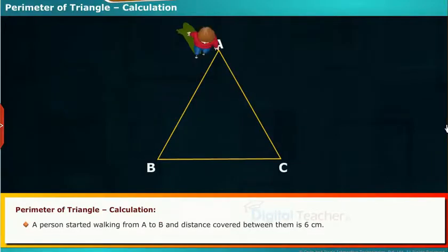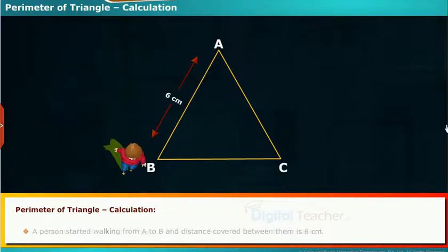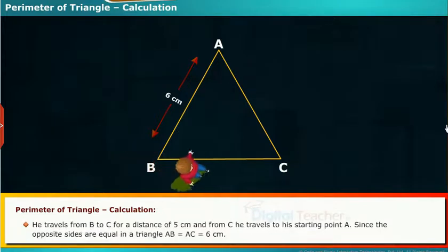Now let us see how we can calculate the perimeter of a triangle. A person started walking from A to B, and distance covered between them is 6 cm. He travels from B to C for a distance of 5 cm, and from C he travels to his starting point A.